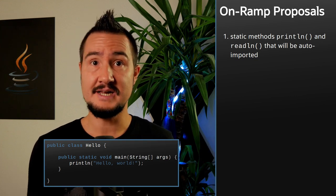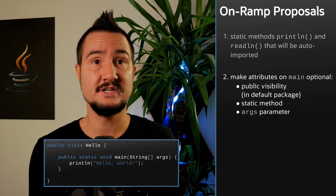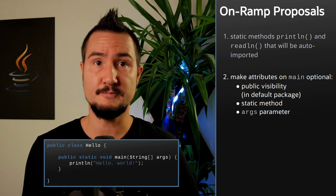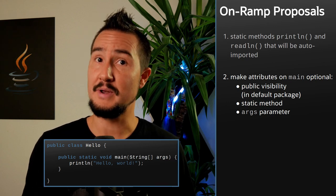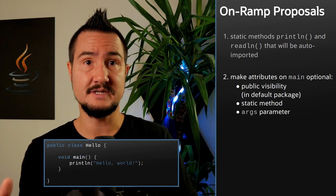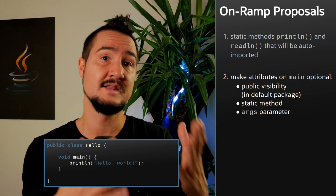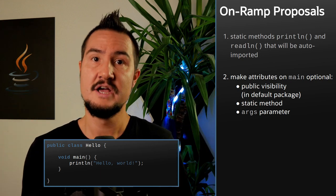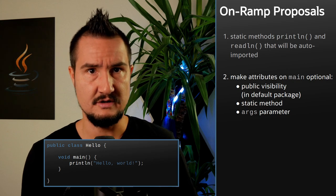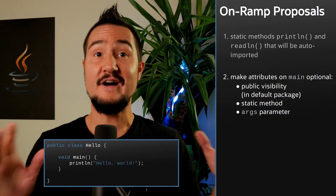Skipping some details, the idea is to make most of the magic incantations optional. Args, static, public — some or all can be absent and the launcher will still find the main method in a class in the unnamed package, which is where simple scripts usually start out. Like this entire proposal, this will of course be structured so that old programs behave like they always did — it's all 100% backwards compatible.